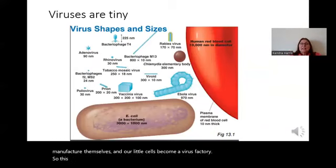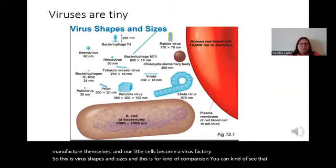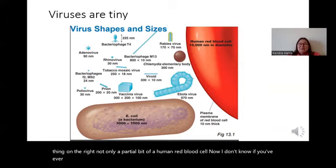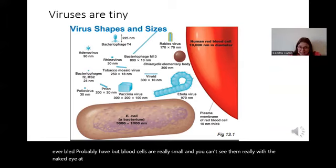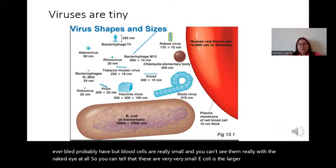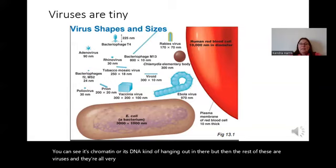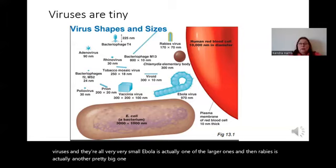Here are virus shapes and sizes for comparison. You can see that red thing on the right — only a partial bit of a human red blood cell. Blood cells are really small and you can't see them with a naked eye. E. coli is the larger oblong purplish-looking thing; you can see its DNA hanging out in there. The rest are viruses and they're all very, very small. Ebola is actually one of the larger ones, and rabies is another pretty big one, but rhinovirus and poliovirus are super, super small — and therefore easy to transmit.